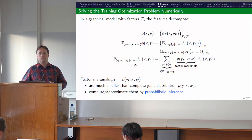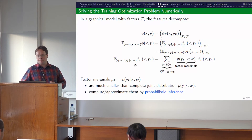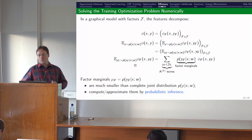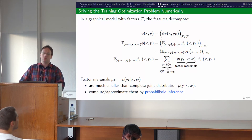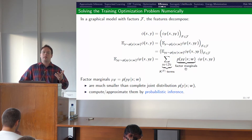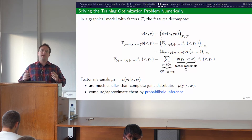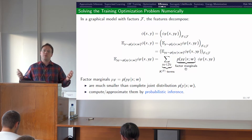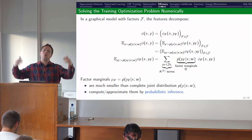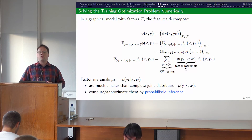A student asks: does it make sense for very densely connected models to use stochastic approximation of the gradients — could a single sample work? The response is: this probably won't make a big difference, because the bottleneck is not the summation itself. Most methods for computing factor marginals — like belief propagation — compute all of them in parallel. You run belief propagation once and get all the marginals out. There are stochastic approximations to these things, but they're not commonly used at this step.